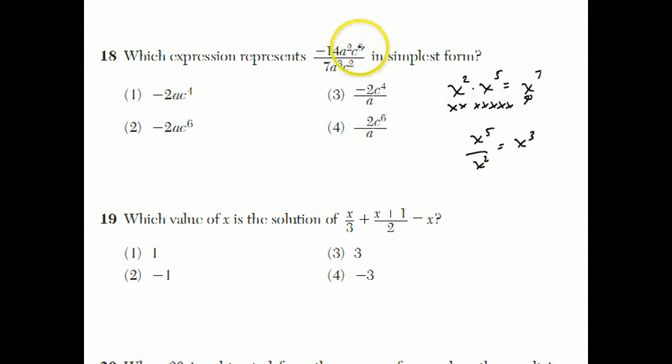Dividing exponents you do by subtracting the bottom exponent from the top exponent. So over here, c to the eighth over c squared, I can reduce that by getting rid of the c squared and turning c to the eighth into c to the sixth.